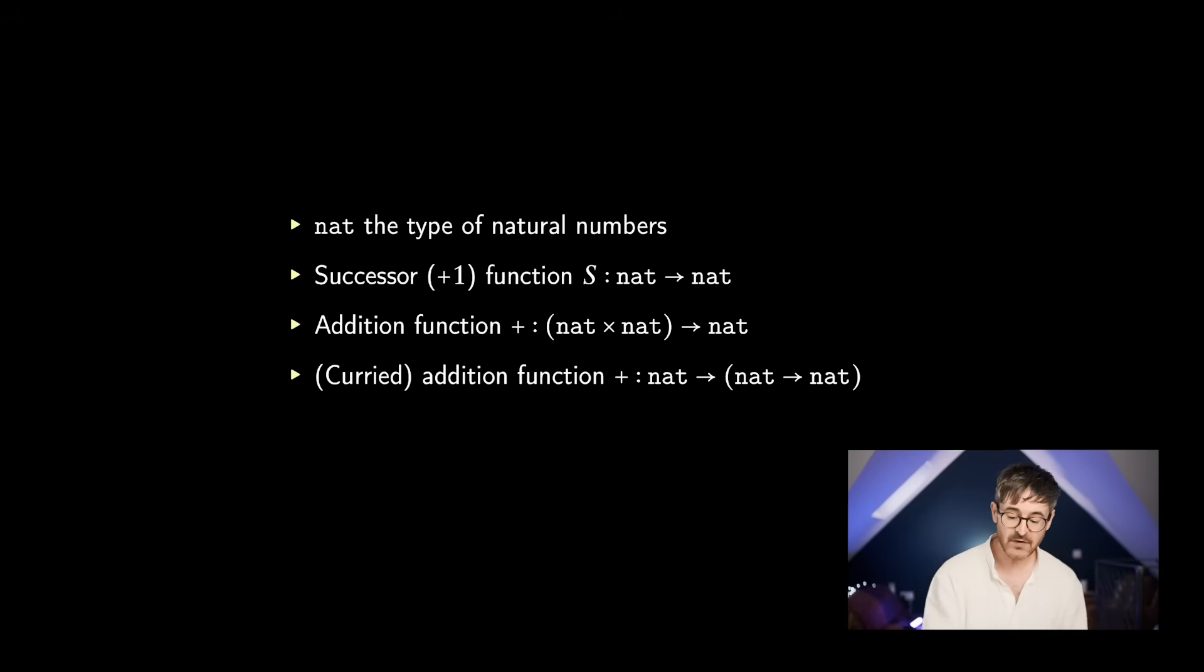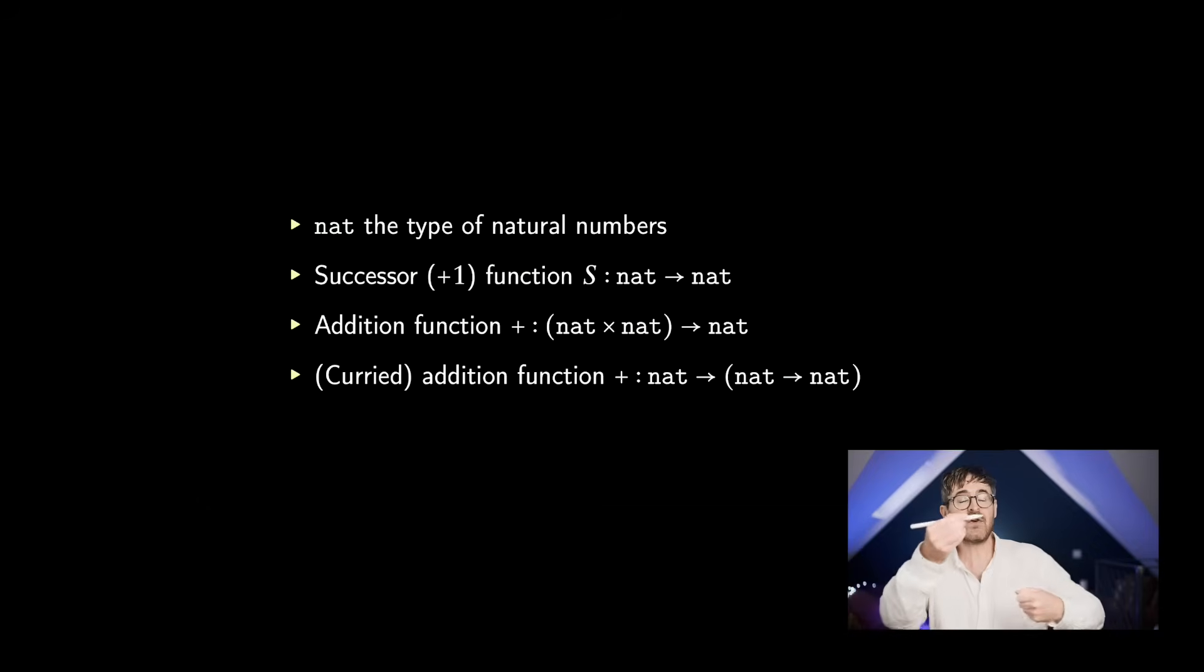We've also got the addition function. What's its type going to be? Well, that takes in two natural numbers, or a pair of natural numbers, and spits out another natural number. So we can say it's got this type, from a pair of natural numbers to a natural number. But there's another way of thinking about it.